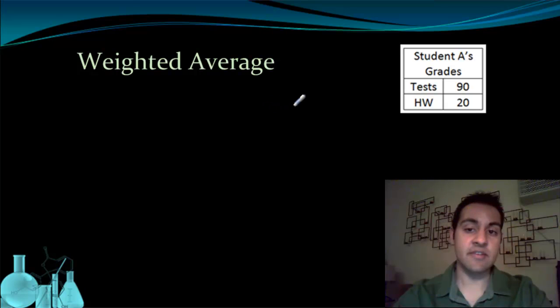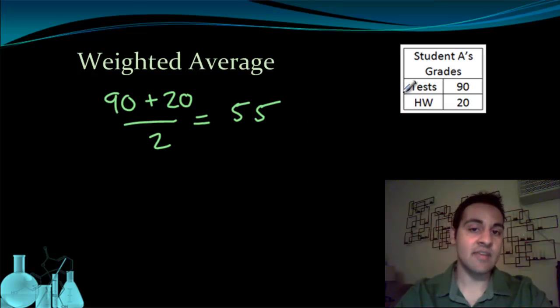Here we have our first example. We have student A's grades. Student A has a test average of 90 and a homework average of 20. If I were to ask you what the student's overall grade is based on these two categories, you may take a regular average, which is 90 plus 20 divided by 2, which would give you an average of 55. But you're making an assumption that tests and homework are worth the same amount.